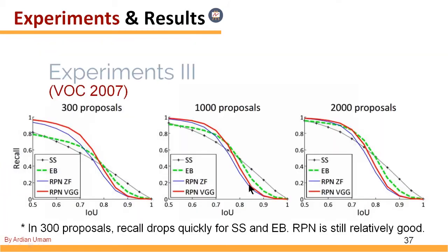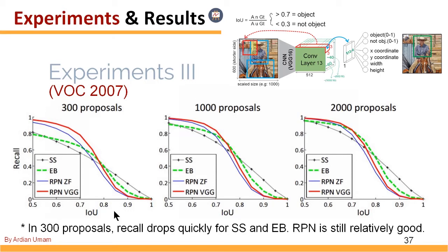This is the recall-IOU curve. Changing the IOU threshold changes the recall value. The most interesting part: with 300 proposals, the blue lines for Faster R-CNN using ZFNet and VGG-16 remain strong, while Edge Boxes and Selective Search decrease significantly when using only 300 proposals. RPN with ZFNet and VGG still performs well.